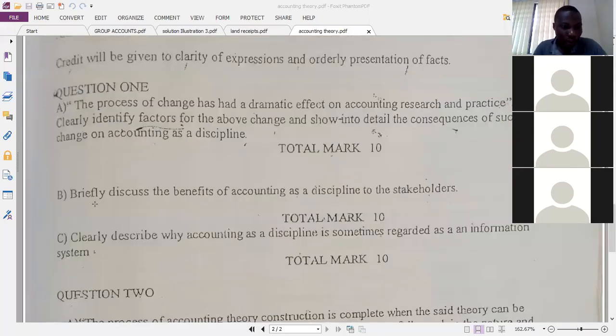When you look at question 1b, briefly discuss the benefits of accounting as a discipline to the stakeholders. The benefits of accounting as a discipline to the stakeholders. Now, I'll mention the benefits for you. And then when you read them, you add the flesh to it. They are there in your book.